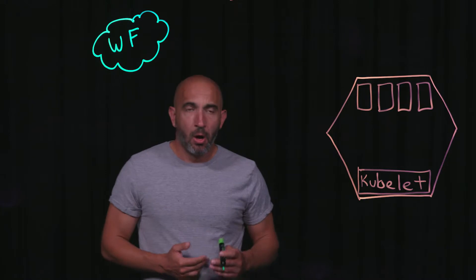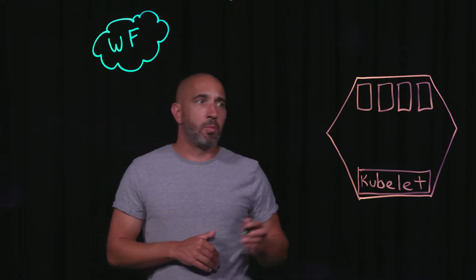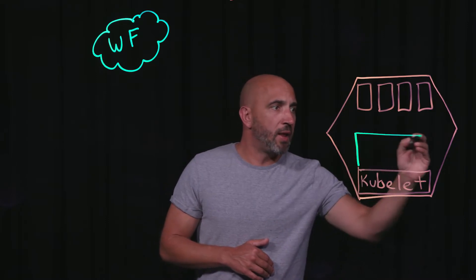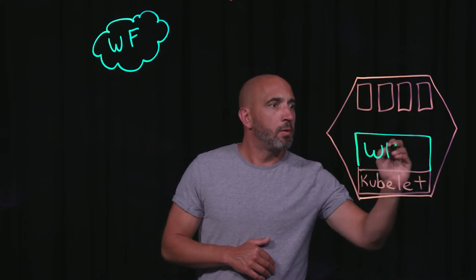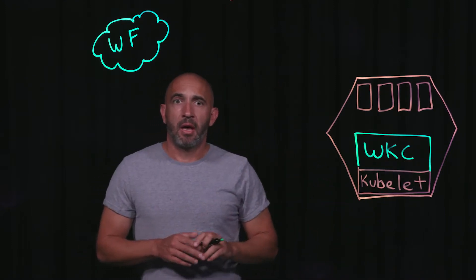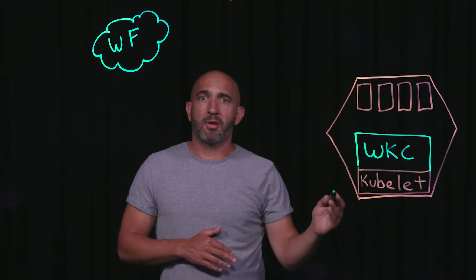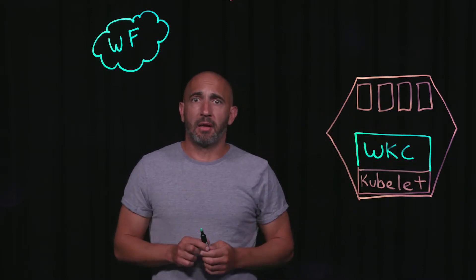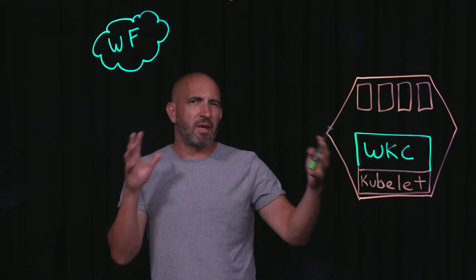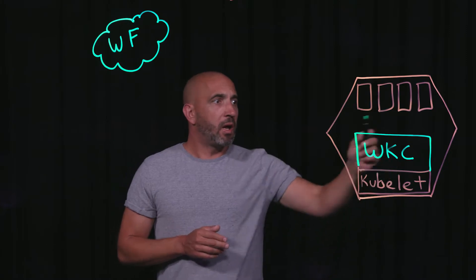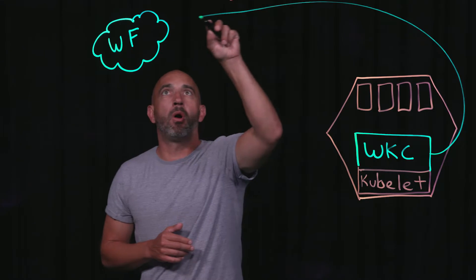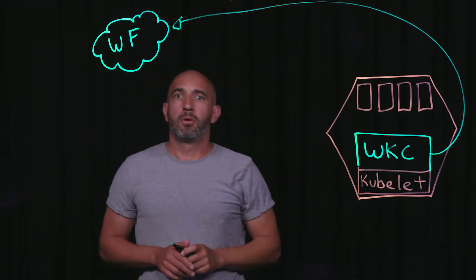To start off, with Wavefront we have something known as a Wavefront Kubernetes Collector, and it lives as a daemon set inside of your nodes. The Wavefront Kubernetes Collector is responsible for collecting all your infrastructure metrics. It will do leader election to make sure it can get your cluster metrics, kube state metrics, and everything else related to the cluster itself. When it collects those metrics from the local kubelets, it will send that information all the way up to Wavefront.